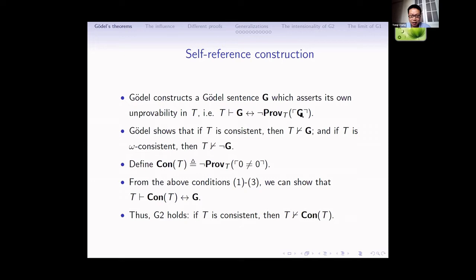Gödel constructs a Gödel sentence G which asserts its own unprovability in T. His G has this property: in T we can prove that G is equivalent to 'G is not provable.' Gödel shows that if T is consistent, then the Gödel sentence is not provable in T. Further, he shows that if T is omega-consistent, then the negation of G is not provable in T. For this step, he used the stronger assumption that T is omega-consistent.